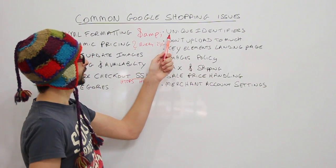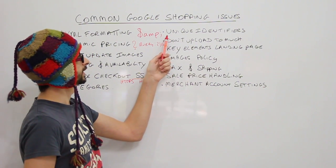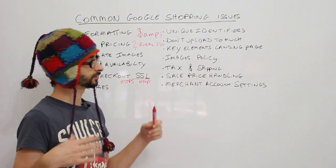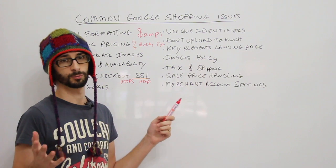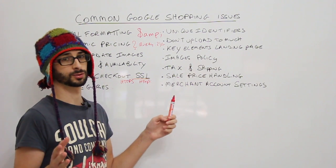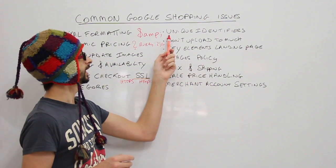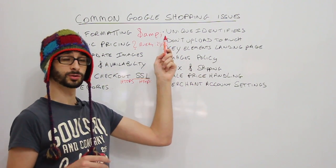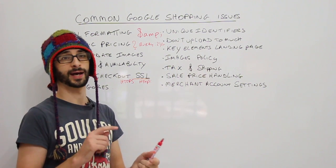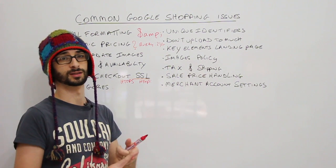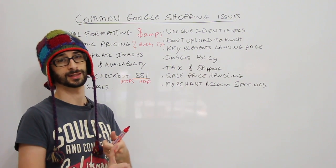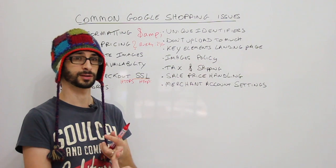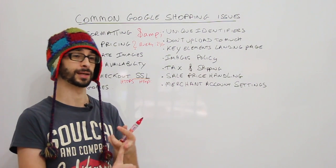Try to fill in the GTIN where possible. If you have custom products, it is of course fine to list them as custom products, and then you do not need to enter the brand, the Global Trade Identification Number, or the manufacturer's product number (MPN).